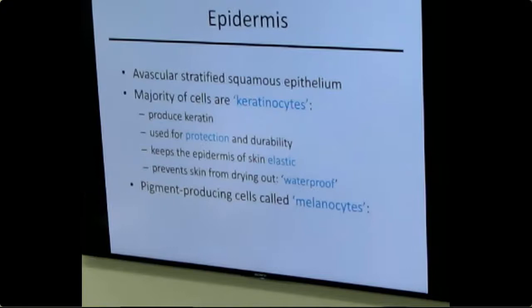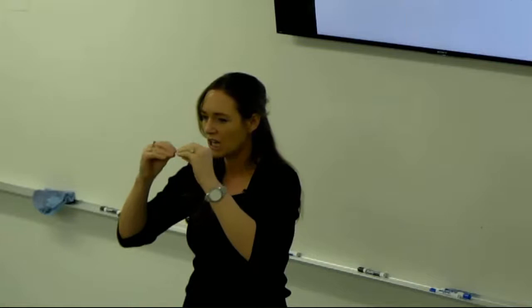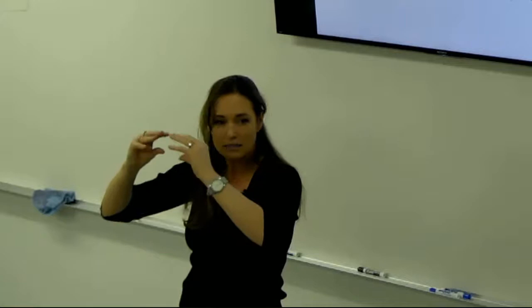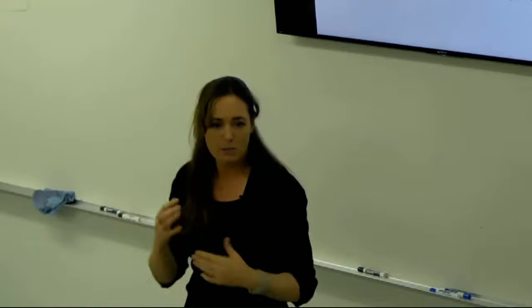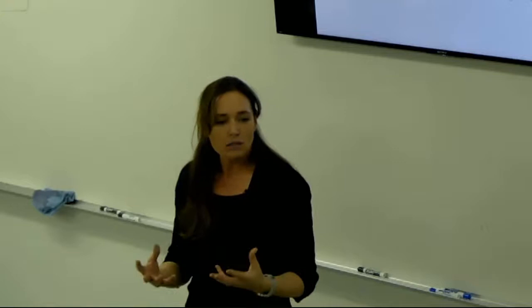The cells making up the stratified squamous epithelial tissue of the epidermis are called keratinocytes. Keratin is like a rubbery, gelatinous, specialized material. Lower layers of the epidermis produce keratin, and as cells stack up and get far from the blood supply, they eventually die, leaving behind a keratin band that becomes our waterproof layer, keeping moisture inside the body.